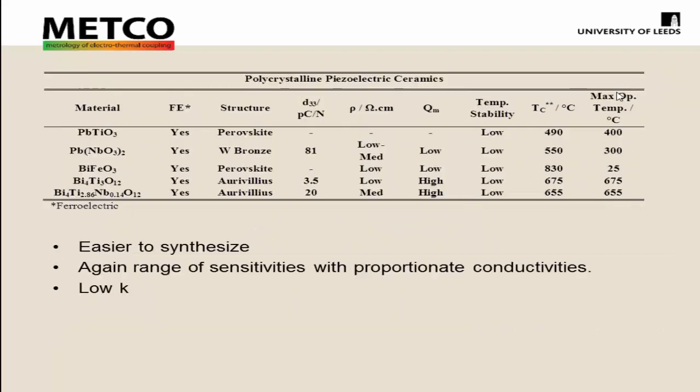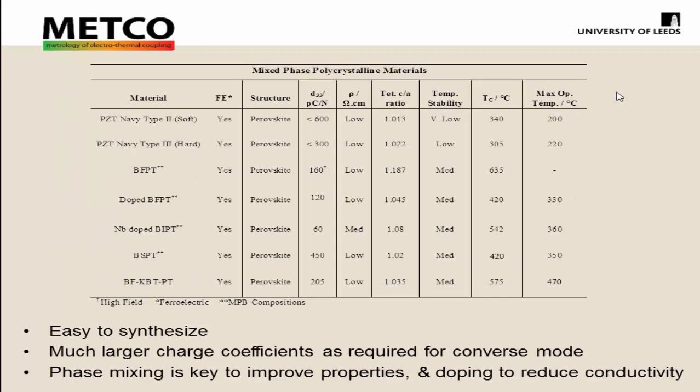So we looked at polycrystalline piezo ceramics — single-phase materials. These are much easier to synthesize, much quicker, so we could make hundreds of pellets to measure and get repeatable measurements. But they have a range of sensitivities proportionate with conductivity, and usually a lower K than we were looking for. We then moved to the mixed-phase polycrystalline materials to mimic PZT. PZT is extremely good, so why do anything different? These are also easy to synthesize, have much larger charge coefficients, and are now in the range we needed to get accurate measurements. Phase mixing is the key to improving properties, and using doping to reduce conductivity — that's the route we took in developing the BFKBT-PT system.